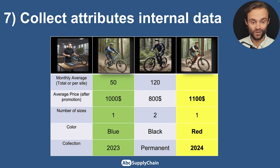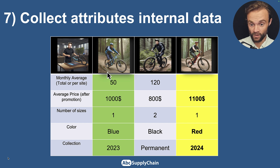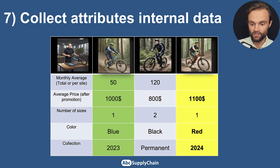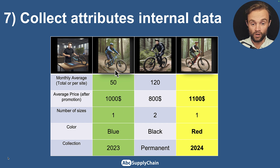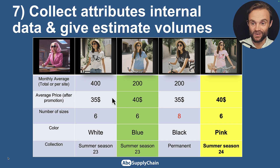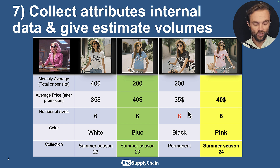You can also check information inside the company using attributes from your similar products. For example, for the blue t-shirt: what is the monthly average total per site or country? What is the average price after promotions — be careful of promotions — the size, color, and year of the collection. We can see that one product looks more similar in terms of price and size, so we'll use that one for comparison. The same approach applies to the t-shirt collection — pick the blue one because it has the most similar size and price.